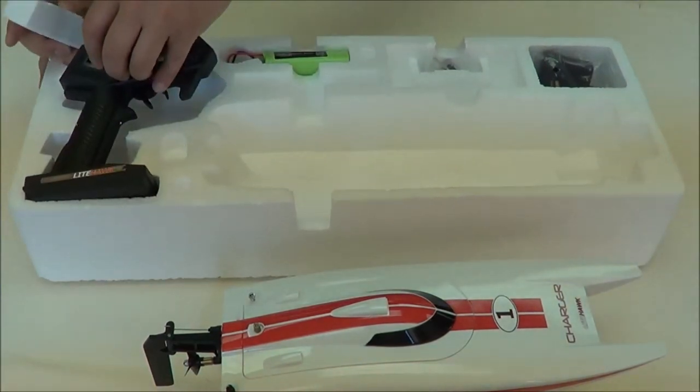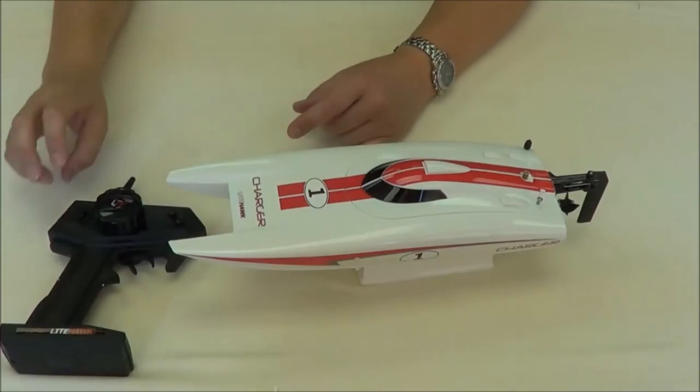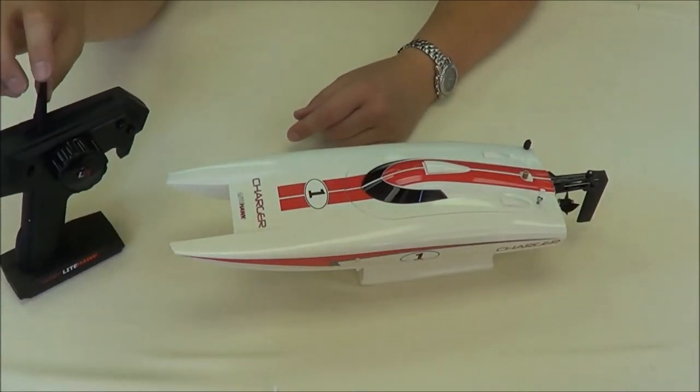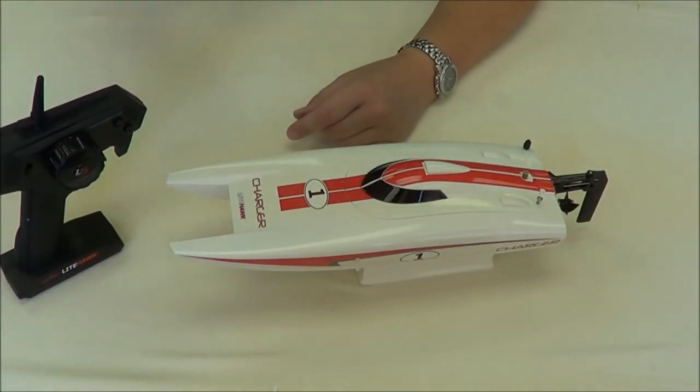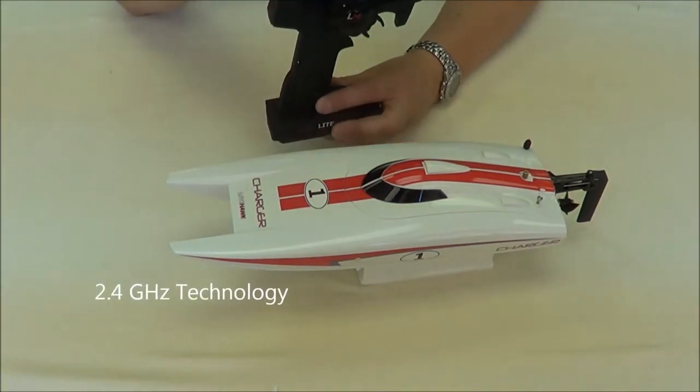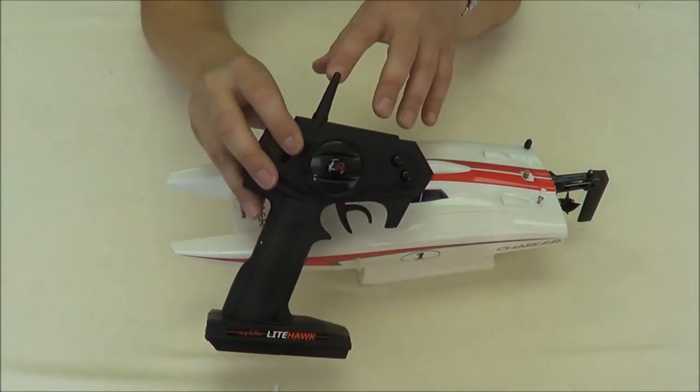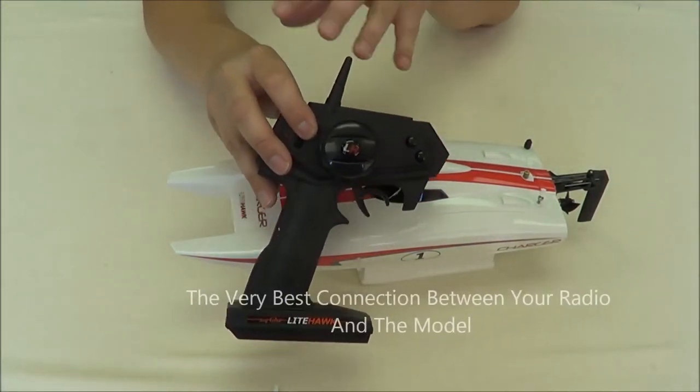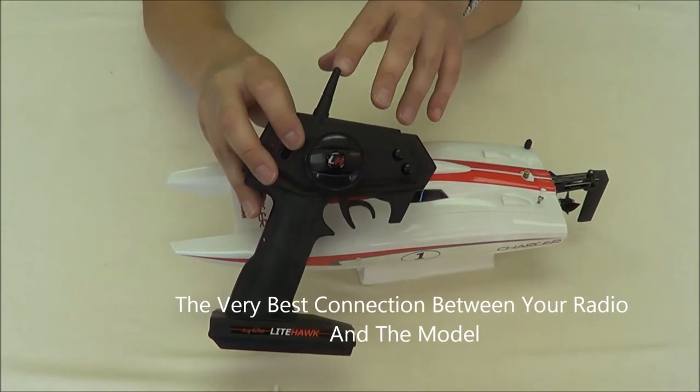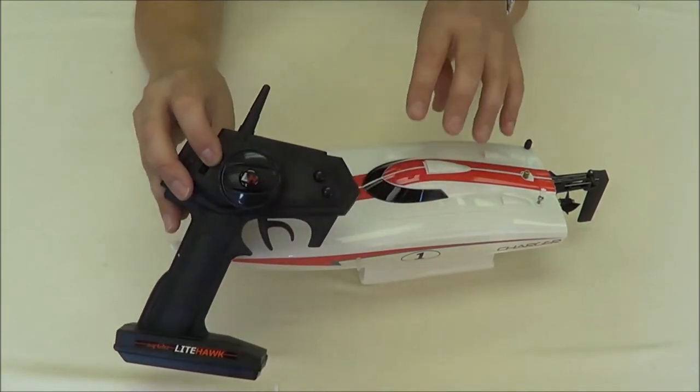Take the radio out. You'll notice there's no metal antenna that comes out of this. This radio uses 2.4 technology, which is the same as a lot of cordless phones. It's the best way to get a connection between the controller and the boat.